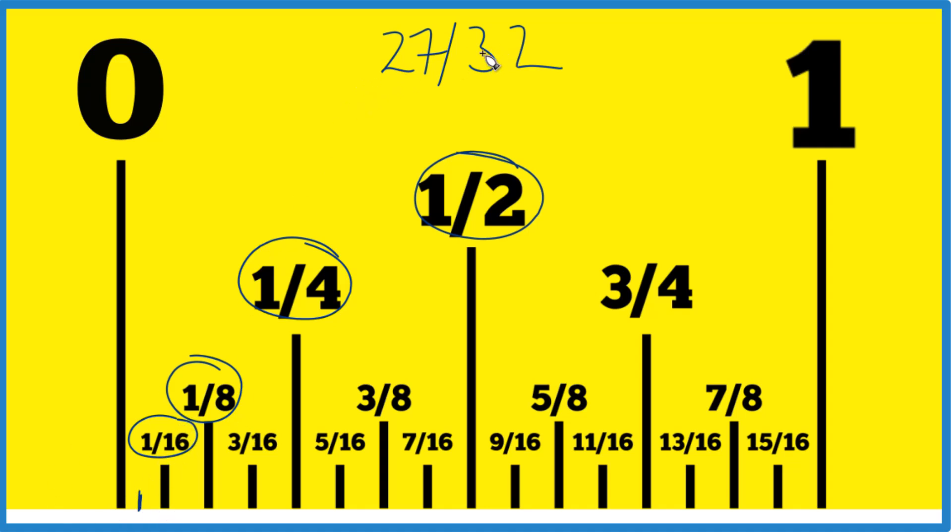So we have 27/32nds. So there are 32 pieces here if we divide them all up like this. And we want 27 of them. So let's just count them off.